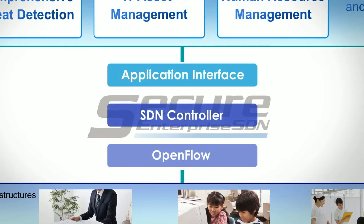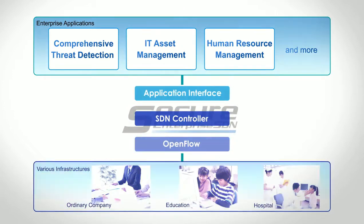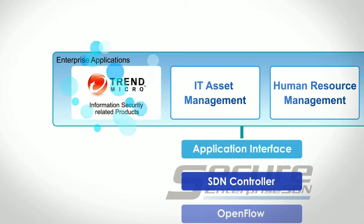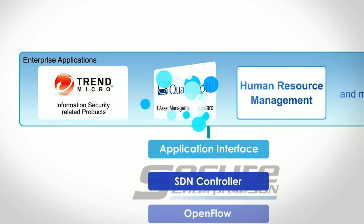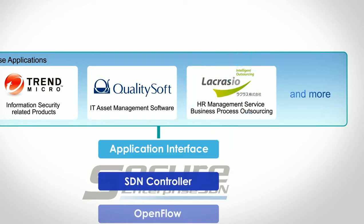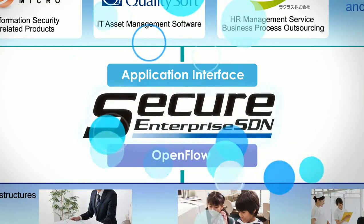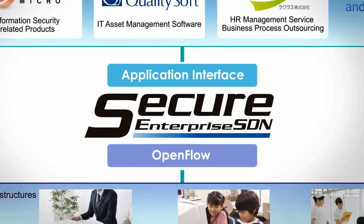SES, based on OpenFlow, dynamically determines the access policy of enterprise networks by getting various information from enterprise applications. This architecture will provide high security and usability for enterprise networks. Specifically, the solution comprises three enterprise applications and cloud services: Comprehensive Threat Detection Engine from Trend Micro, IT Asset Management Software from QualitySoft, and the Human Resource Management Service from LaCresse. The SDN Controller from Allied Telesis will automatically maintain enterprise networks related to these applications.